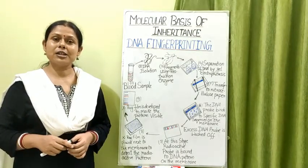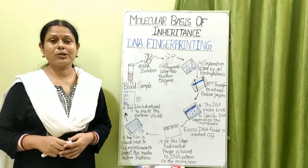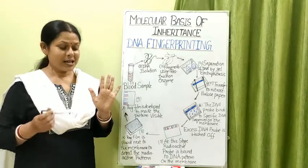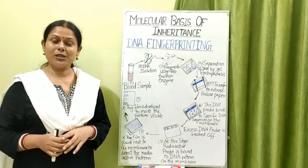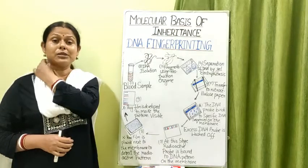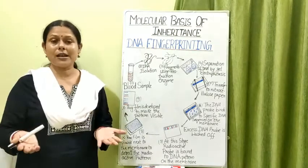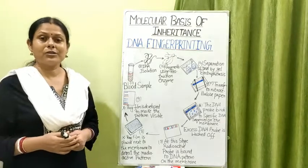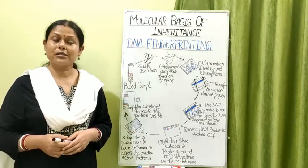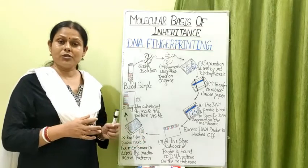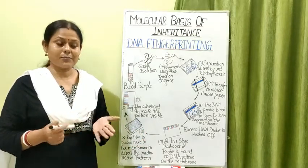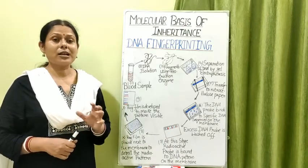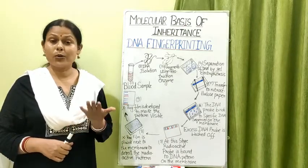The need for DNA fingerprinting came into existence because early criminal investigations used fingerprinting for identification. Every one of us has a unique fingerprint, and it was solid evidence to find the culprit — by matching fingerprints on objects a criminal had touched with those of a suspect.